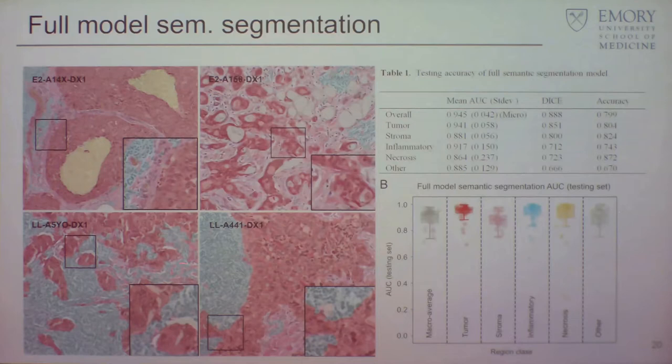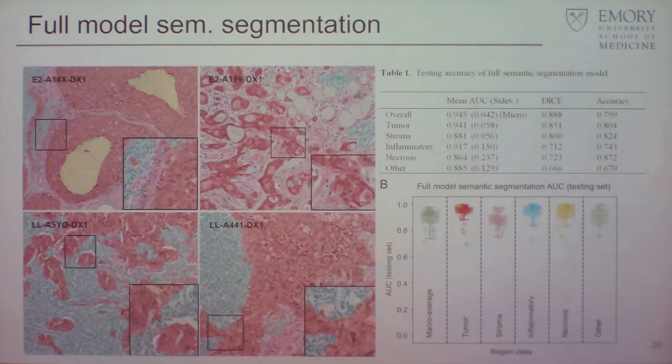This is a qualitative examination of results — you can see the segmentation boundaries really correspond well with the tissue. For the AUC results, there's no state-of-the-art dataset to compare to, but generally speaking when you see AUCs higher than 90, you know you're on the right track.